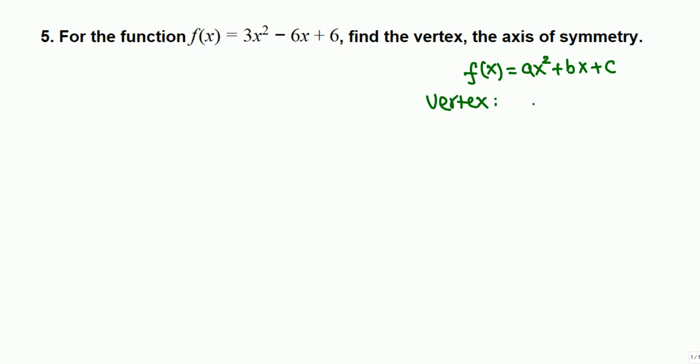Vertex means x coordinate and corresponding y coordinate. The x coordinate, or we can say (h,k) vertex, h will be given by negative b over 2a. This is the x coordinate, and corresponding y coordinate will be evaluated by the function at negative b over 2a.